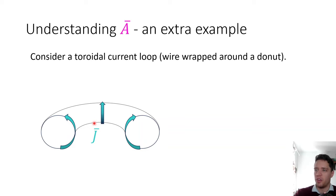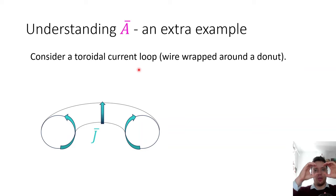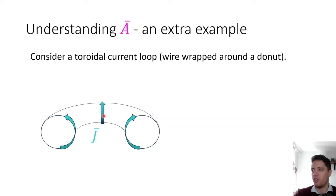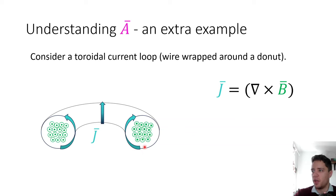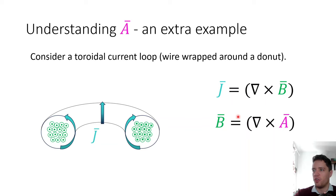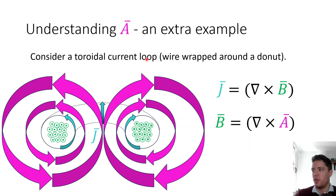As another example, consider a toroidal current loop — imagine taking a donut, wrapping wire around it, and running a current through it. In cross-section you can see the current running in loops. Using the same equation, the B field points into the donut and loops all the way around. Looking at the vector potential, A should be spinning around the B vectors, and indeed when we do the math we get a field that loops around the B field like so.